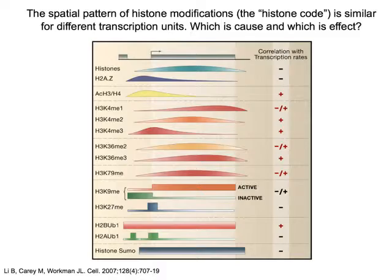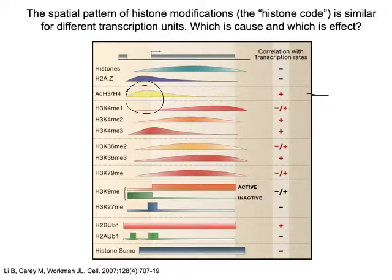The details aren't important, but if we look genome-wide in a yeast cell — and to some extent in other cells as well — we see these patterns of modifications as we take an average gene. For example, histone acetylation we find associated with promoters, the beginnings of genes, not so much with the transcription units themselves.